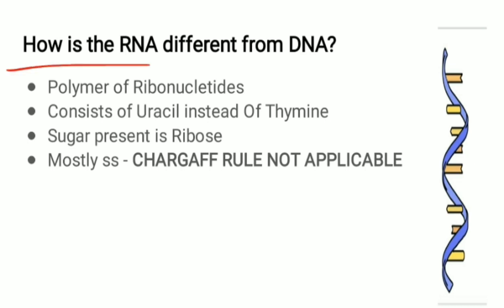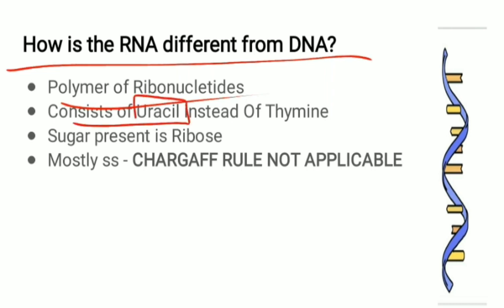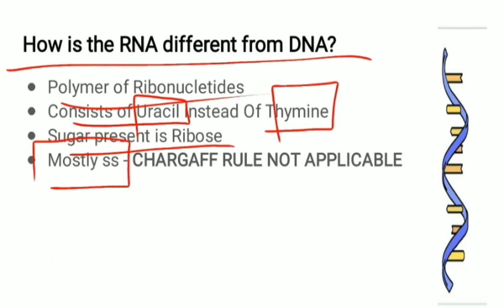How is RNA different from DNA? RNA is a polymer of ribonucleotides, whereas DNA is a polymer of deoxyribonucleotides. RNA consists of the nitrogen base uracil, whereas DNA has thymine. The sugar present in RNA is ribose and in DNA is 2'-deoxyribose. RNA mostly exists as a single-stranded molecule.